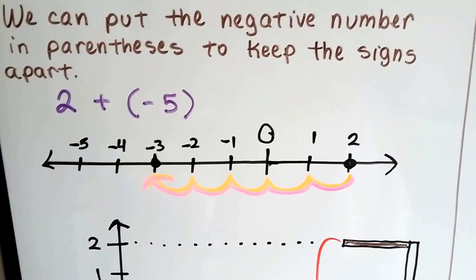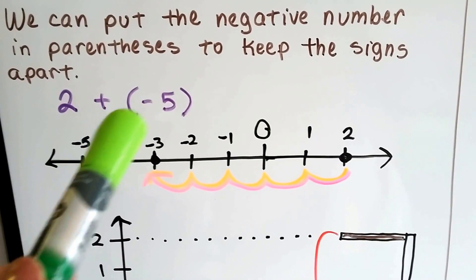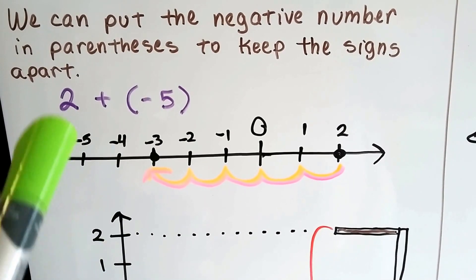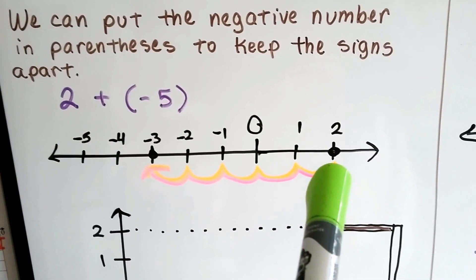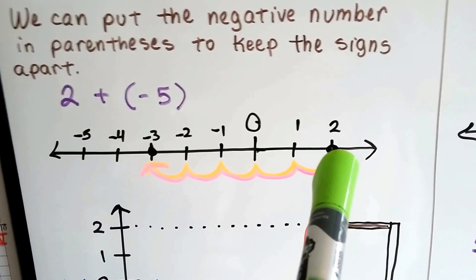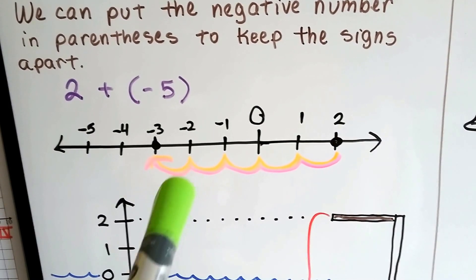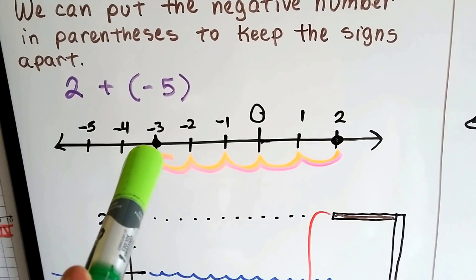So we've got 2 plus negative 5, and it's in parentheses because we don't want to confuse it with that plus sign. We start at the 2 on the number line, which is right here, and we're going to add negative 5. So that means we're going to take away 5. We go 1, 2, 3, 4, 5, and that gets us to negative 3.